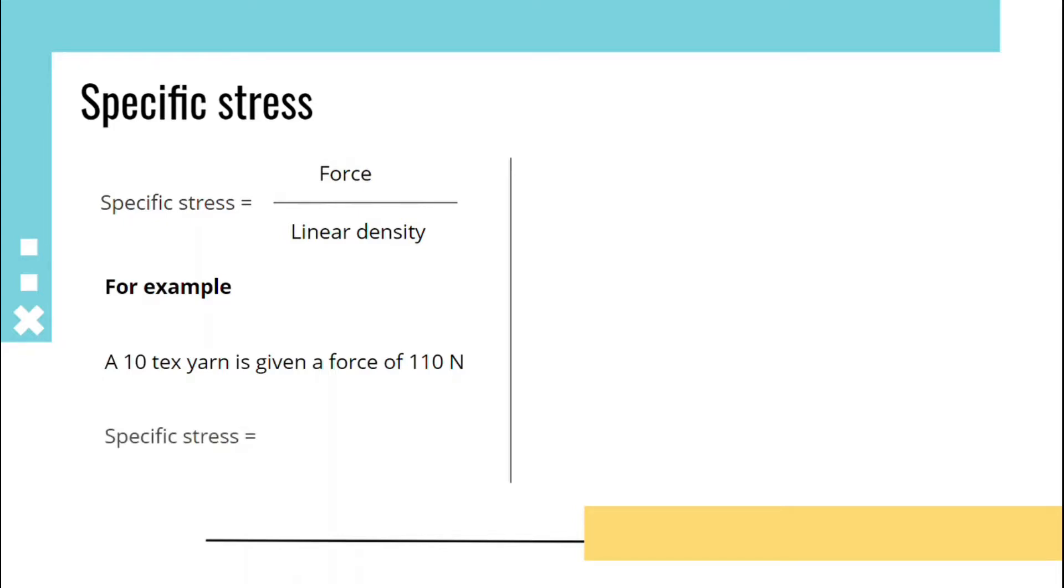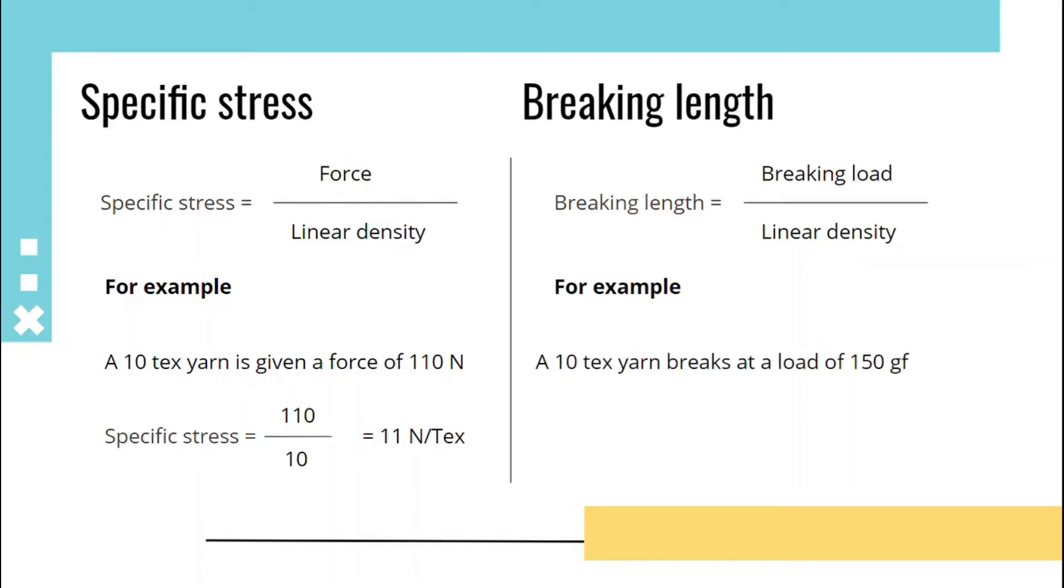Breaking length is the ratio of breaking load upon linear density. For example, a 10 tex yarn breaks at a load of 150 gram force. Its breaking length is 150 upon 10, that will be 15 kilometers, with units of grams per tex.